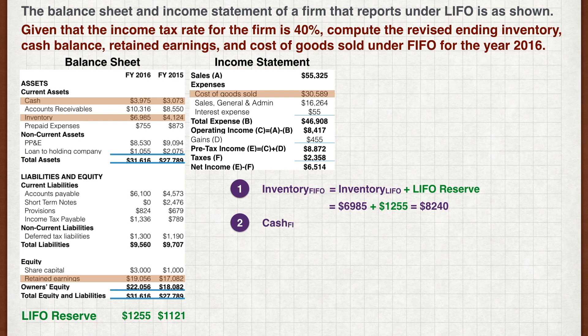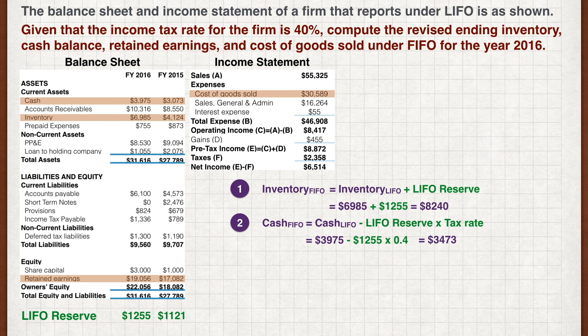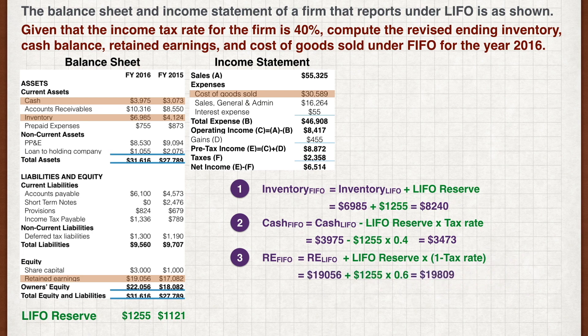Next, the FIFO cash balance is the LIFO cash balance minus the cumulative taxes saved. Plug in the figures, and we get a cash balance under FIFO of $3,473. The FIFO retained earnings is the LIFO retained earnings plus the cumulative earnings not reported under LIFO. This amount is the LIFO reserve multiplied by 1 minus the tax rate. Plug in the figures, and we get a figure of $19,809.